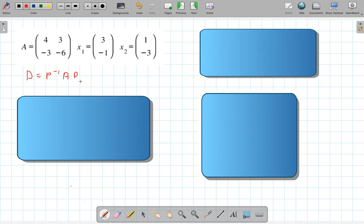And we have two different vectors for P. The first one we're going to deal with is x1, x2. And that's going to give me 3, negative 1, 1, negative 3. And I'm going to go through this first one, and then you can do the second one.